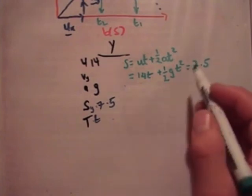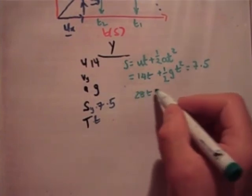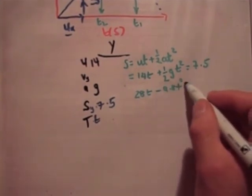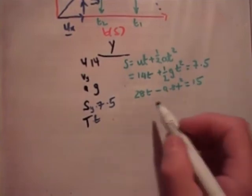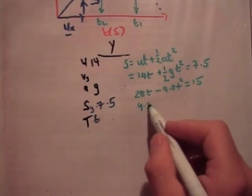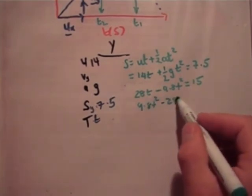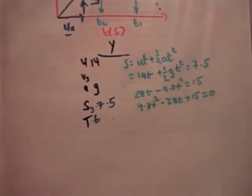So let's rearrange this. I'm going to multiply everywhere by 2. So 28t minus 9.8t squared equals 15. Rearrange that again. We get 9.8t squared minus 28t plus 15 equals 0.